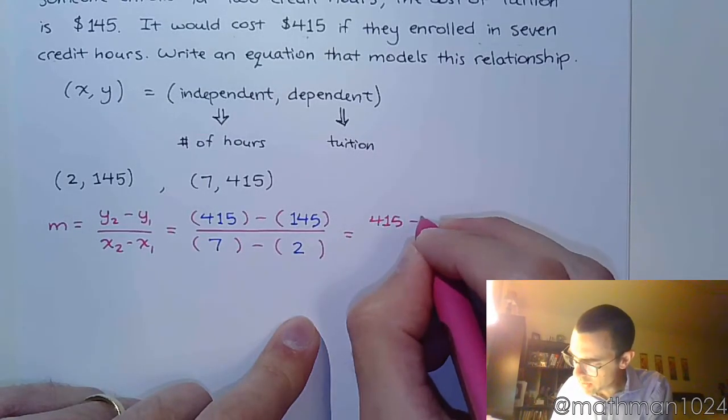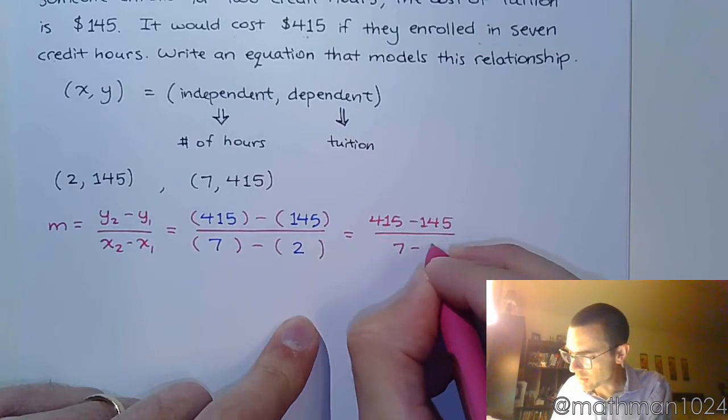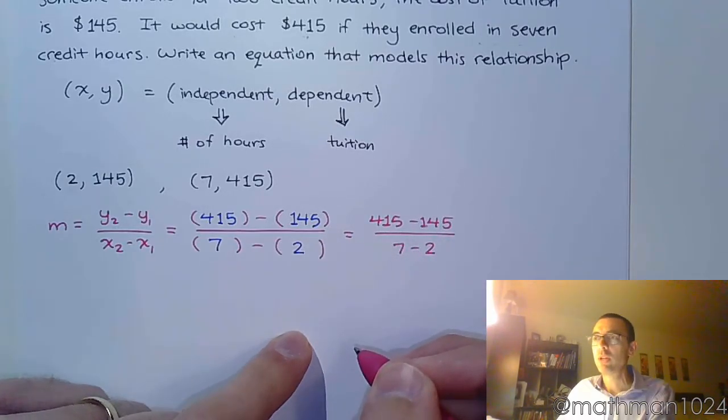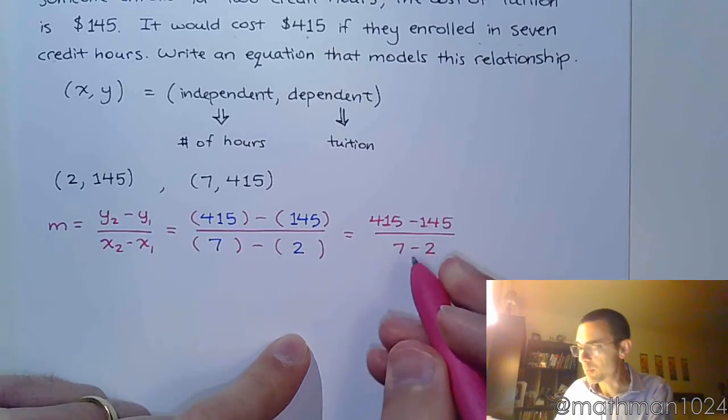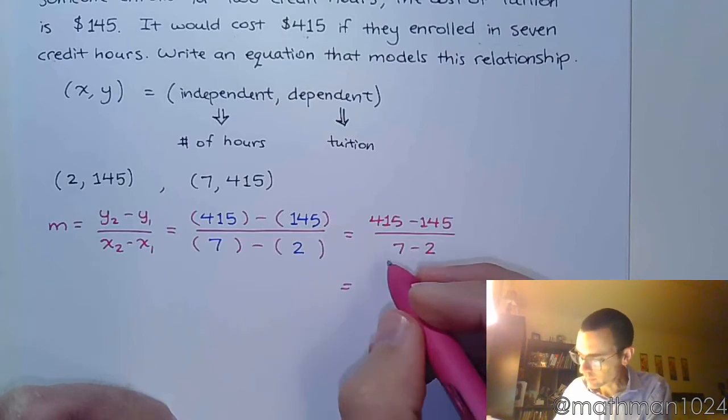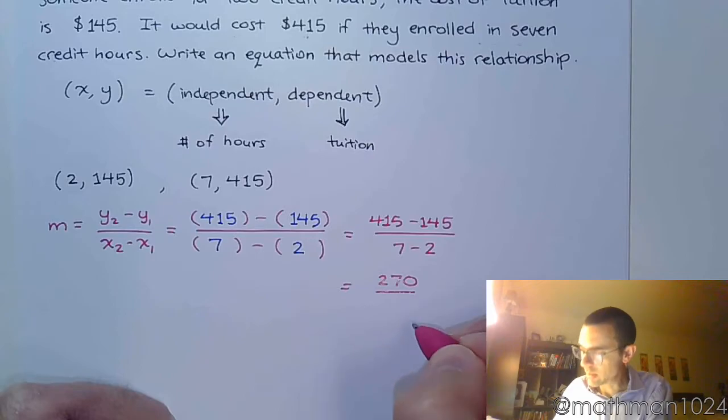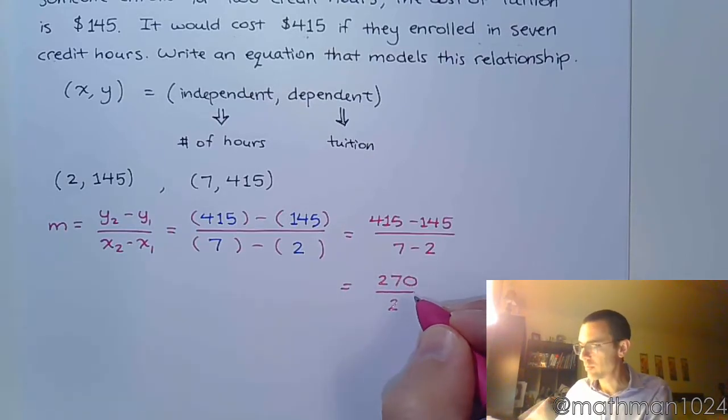All right, so we've got 415 minus 145 over 7 minus 2. Fortunately, there weren't any negatives that we were plugging in, so this is pretty simple. 415 minus 145 gives us 270. Over 7 minus 2 is 5.